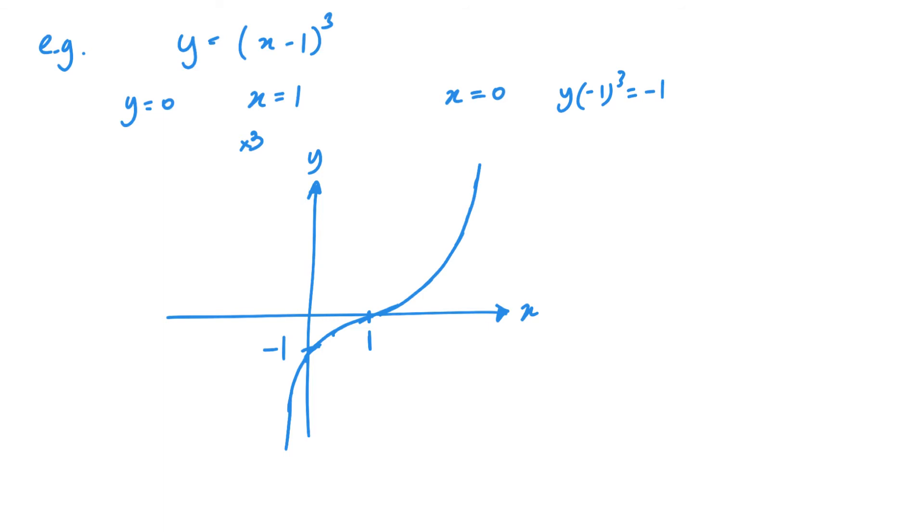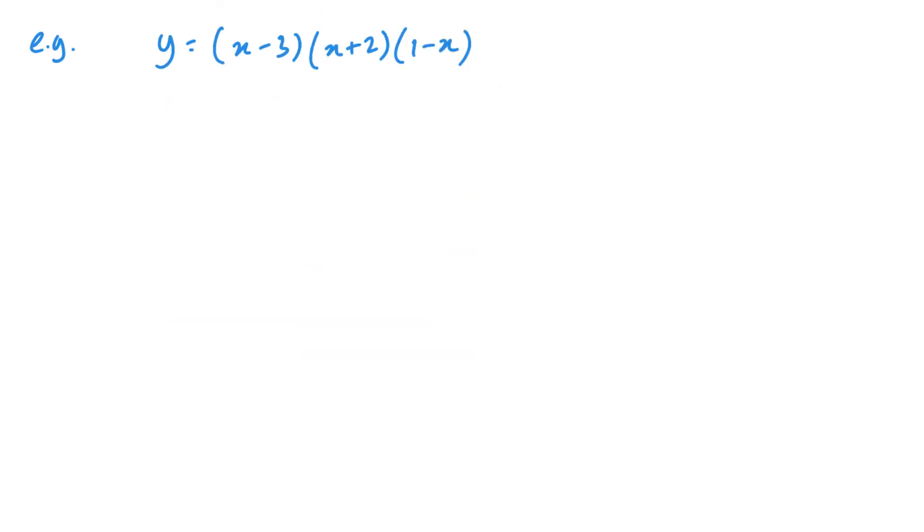The only additional ones now to look at is what happens with a negative x cubed. And I'll do one of those just to show you. So here we have our next example. You can see here, x times x times that minus x will give me my minus x cubed. When y equals 0, my solutions are going to be x is 3, x is negative 2, and x is 1.